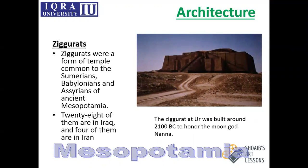Ziggurats were a form of temple common to the Sumerians, Babylonians, and Assyrians, and to some parts of ancient Mesopotamia as well. These ziggurats were very huge structures, occupying a lot of land, but the common civilians were not allowed to enter them. Only the priest was allowed to enter, and this gave the priest a great deal of power.